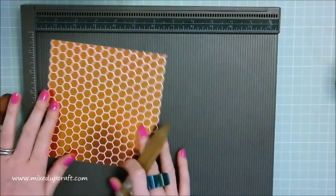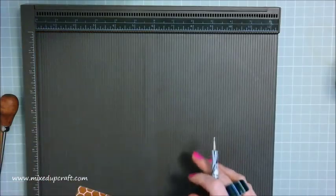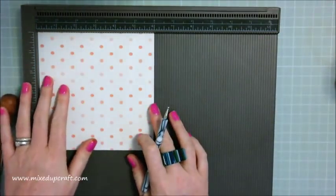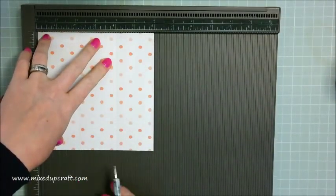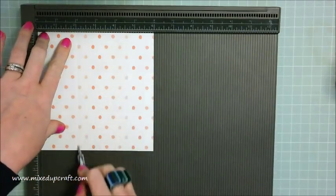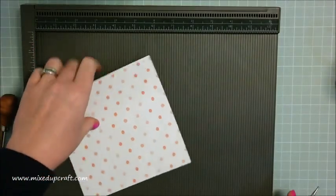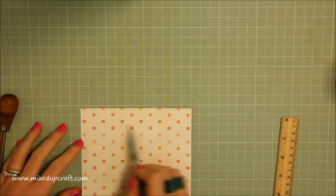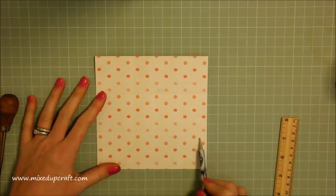I'm going to flip it over so I don't scratch the foiling on top. You want to score at two, four, then rotate and score at two and four again. That's all the scoring with the scoreboard. Grab your ruler and you've got three, six, and nine squares.